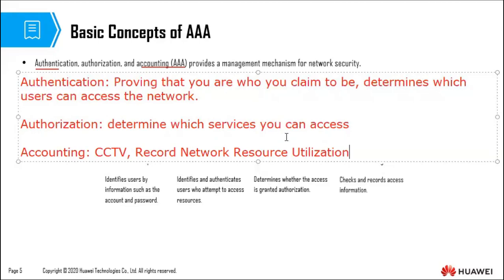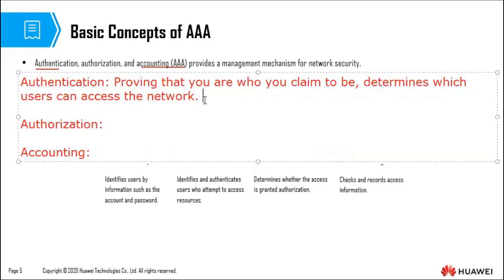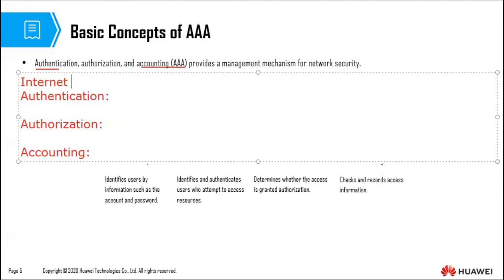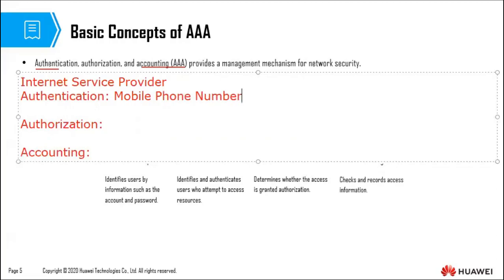One of the institutions that uses AAA is the internet service provider. How does the ISP use AAA? When you connect to your internet, you have to be authenticated. For example, if you're using your mobile phone, they use your mobile phone number to authenticate you — is this number legit, is it active? Then for authorization, they check whether you have data bundles.